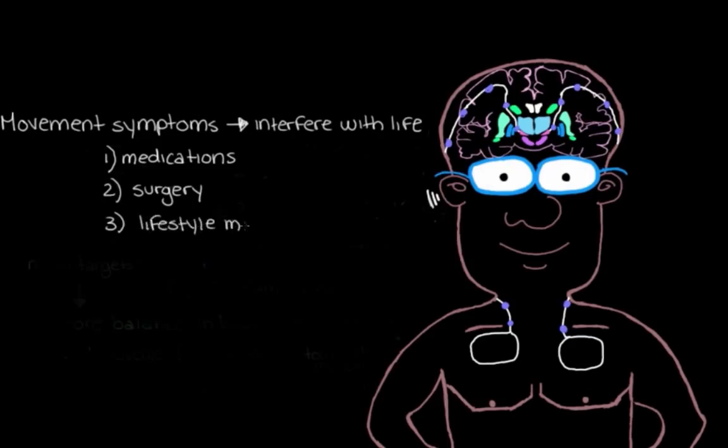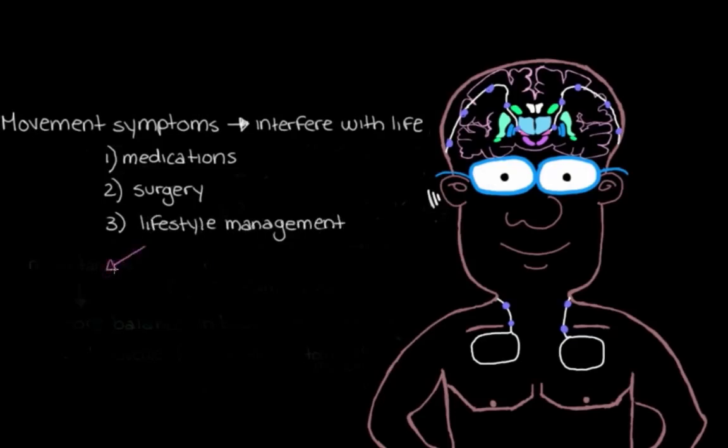So for example, exercise and physiotherapy, while they won't stop or slow down the movement signs, they can help to alleviate some of the associated muscle and joint pain that can result from things like rigidity and the postural changes that can happen over time with Parkinson's disease.